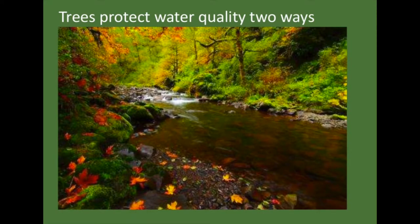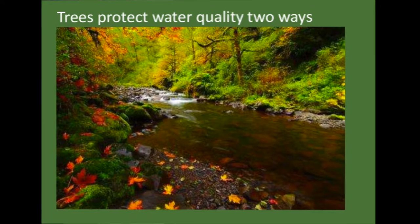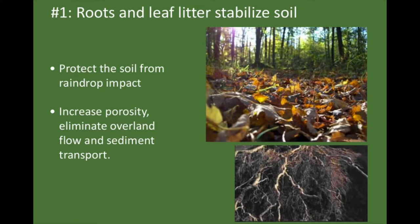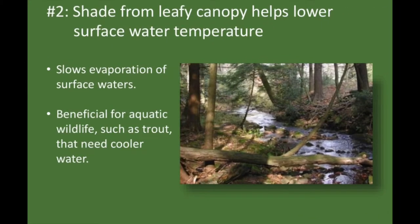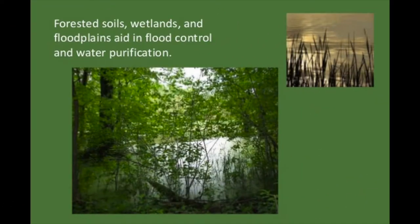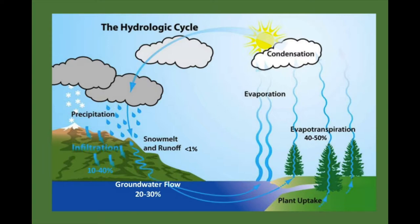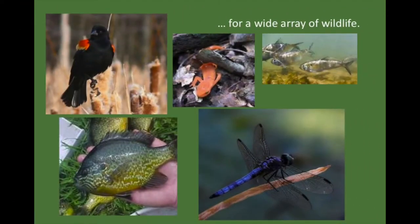Let's talk about a few of the ways that a forest can provide important ecological services. Trees protect water quality in two important ways. First, roots and leaf litter stabilize soils — they protect the soil from raindrop impact, increase porosity, and eliminate overland flow and sediment transport. Second, the shade from the leafy canopy helps lower surface water temperature and slows the evaporation of surface waters, which is beneficial for aquatic wildlife like trout that need cooler water. Forested soils, wetlands, and floodplains also aid in flood control, important water purification, and support the water cycle as well as habitat for a wide array of wildlife.